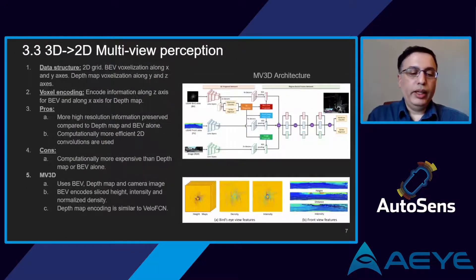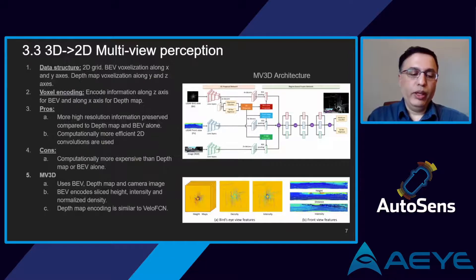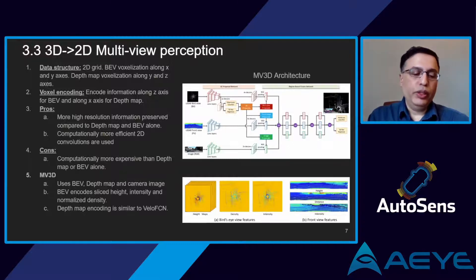Our third technique is 2D multi-view, which uses Euclidean space. Multi-view includes both bird's eye view and depth map representations. This approach preserves more high-resolution information and achieves higher accuracy. We can directly apply 2D convolutions due to the spatially ordered structure of both views. While 2D convolutions are less expensive than 3D convolutions, this approach is computationally more expensive than using either bird's eye view or depth map alone.